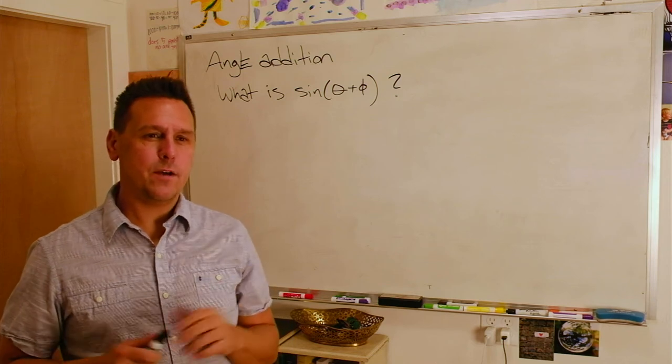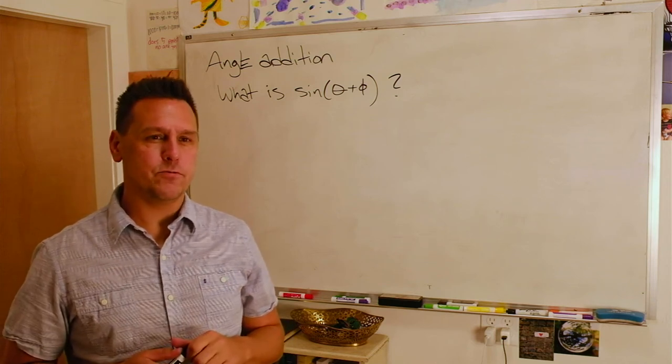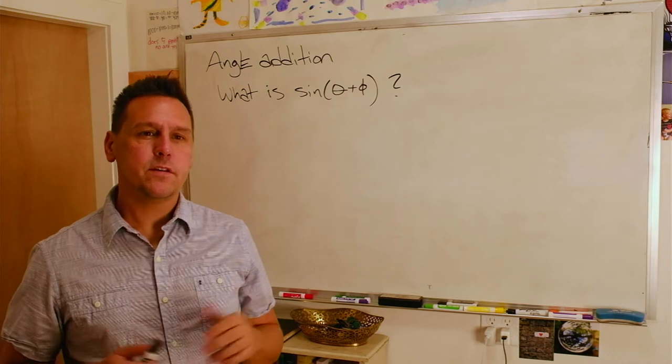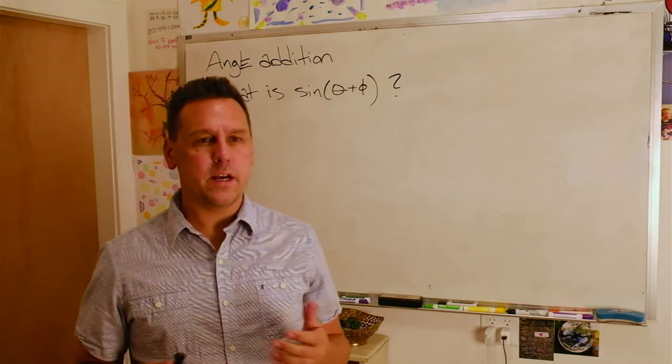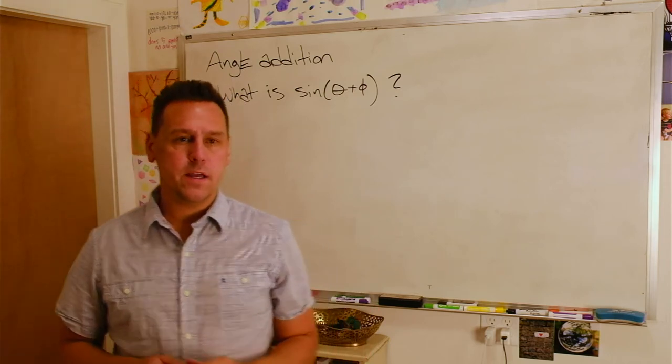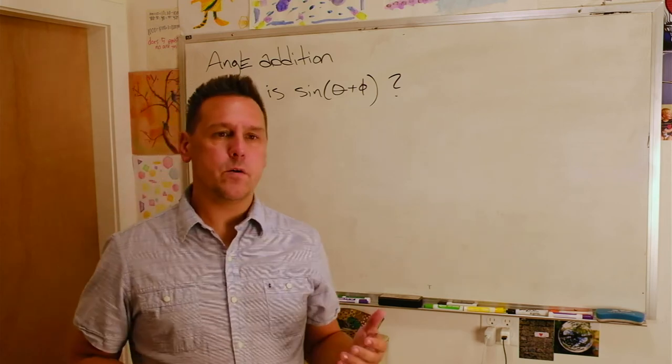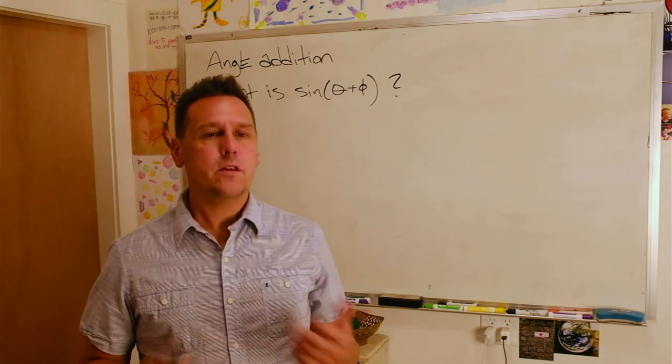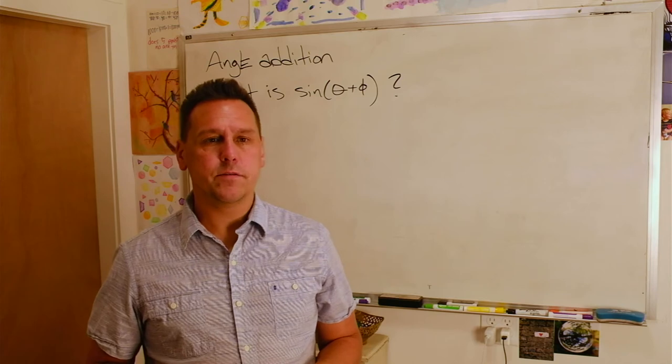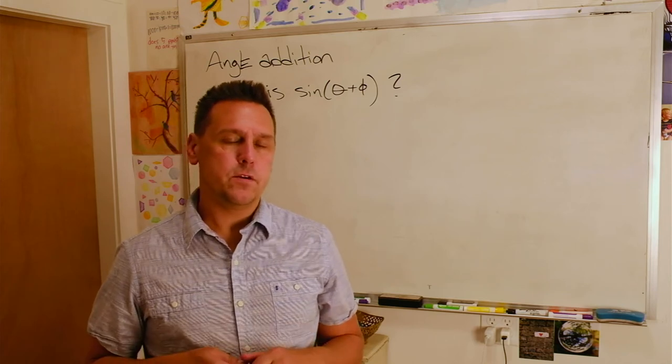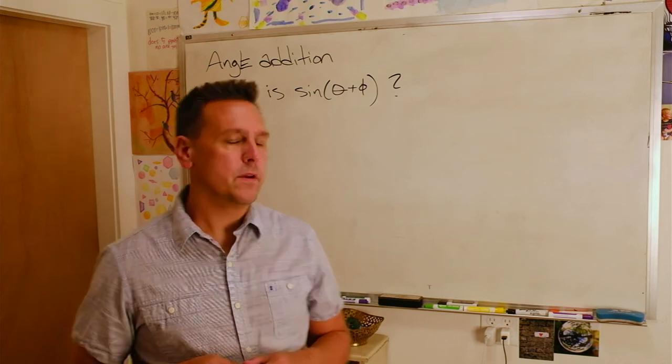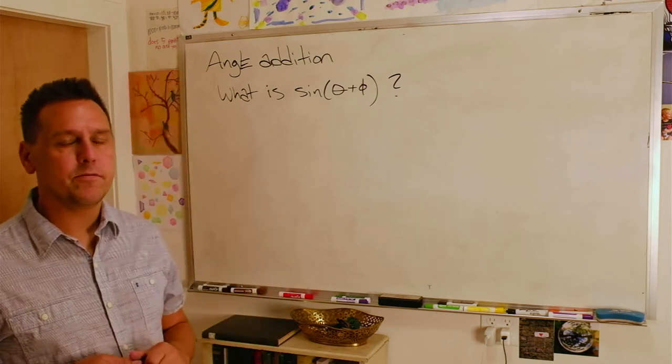Okay everyone, today I wanted to talk to you about angle addition formulas. In particular, if you know you've got an angle theta, another angle phi, and you know the sine and the cosine of those two angles, can you find the sine of the angle that you get from adding the two angles together? In other words, what is the sine of theta plus phi?